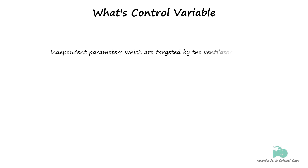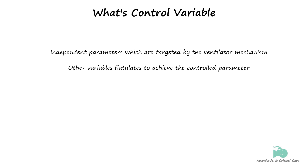Control variables in mechanical ventilation are independent parameters which are targeted by the ventilator mechanism, and upon which all other variables are dependent. The ventilator uses the control variable as a feedback signal for controlling inspiration. The word 'control' means that the person setting the ventilator focuses on managing this specific variable without allowing the respiratory system to influence it. As mentioned, volume and pressure are used as control variables. We need to distinguish that terms like volume-controlled and pressure-controlled ventilation refer to different control variables, not different ventilator modes.